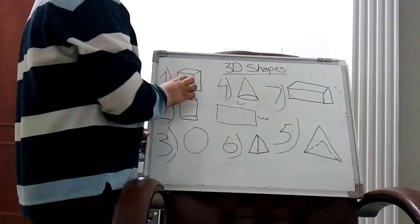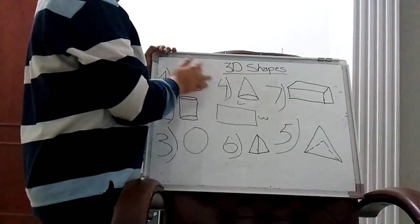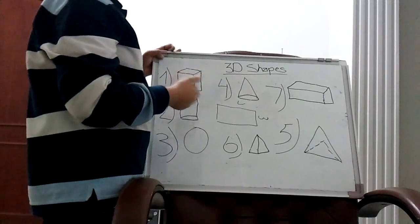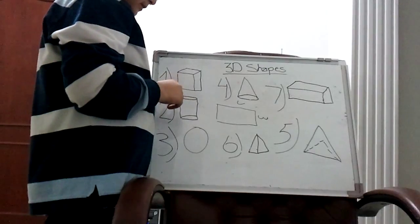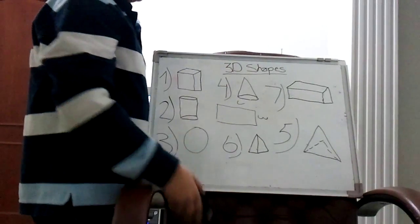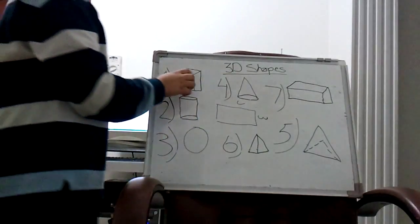Faces are the surfaces of a shape. One, two, three, four, five, six - it has six faces. Let me just tell you, I couldn't get a physical example for most of the other shapes, but the cube has six faces.